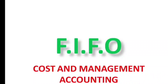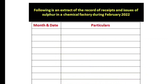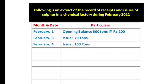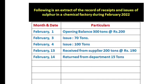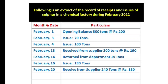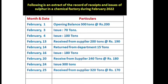The FIFO problem involves the issue of Sulphur in a chemical factory during February 2022. February 1: opening balance 300 tons each 200 rupees. February 3: issue 70 tons. February 4: issue 100 tons. February 13: received from supplier 200 tons each 190 rupees. February 14: returned from department 15 tons. February 24: issued 300 tons; received from supplier 320 tons each 170 rupees. February 24: issued 100 tons. February 28: issued 200 tons.